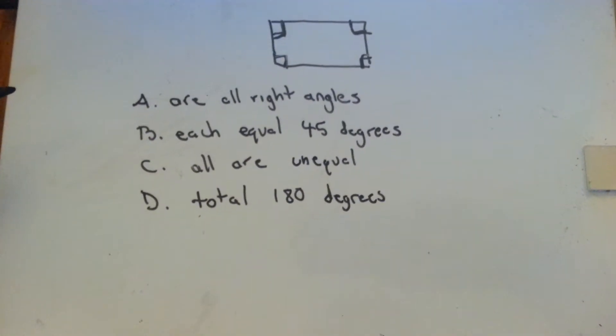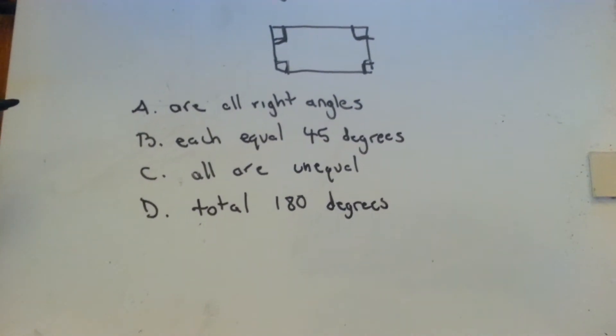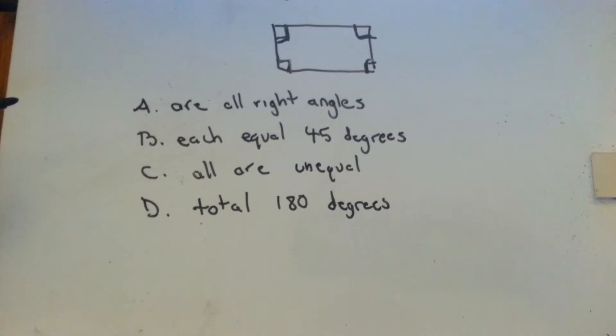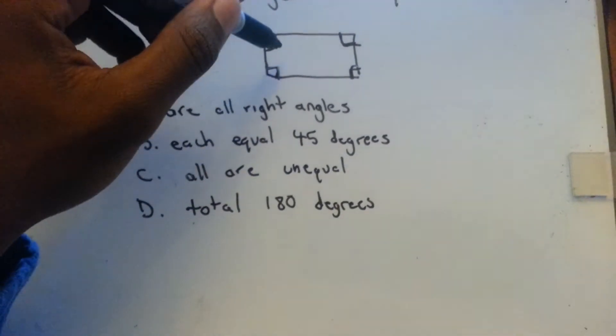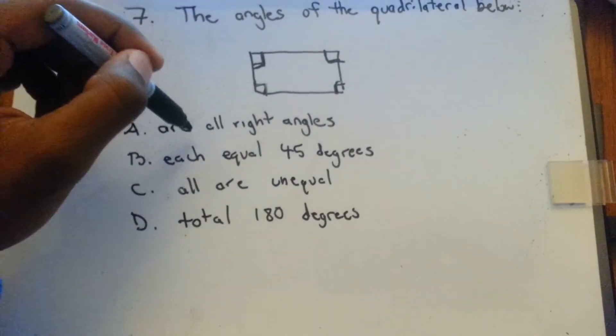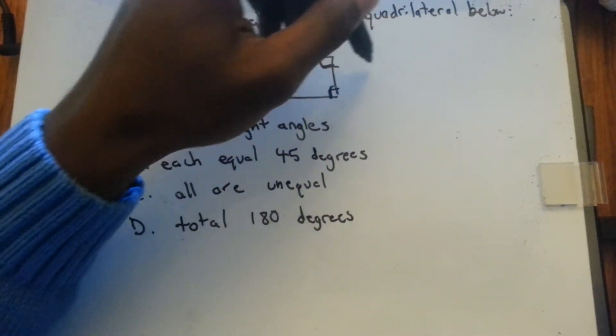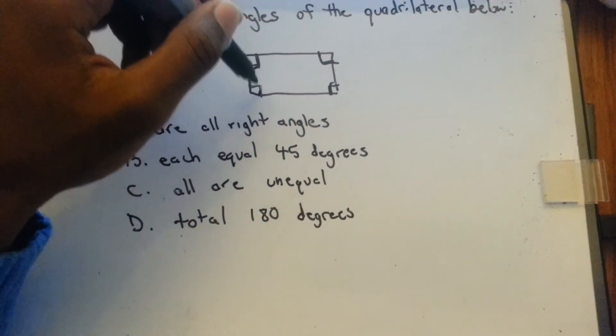In case you didn't know, all the angles inside of a quadrilateral equal 360. So, just to prove that and prove that this answer is right we have 90 plus 90 plus 90 plus 90.